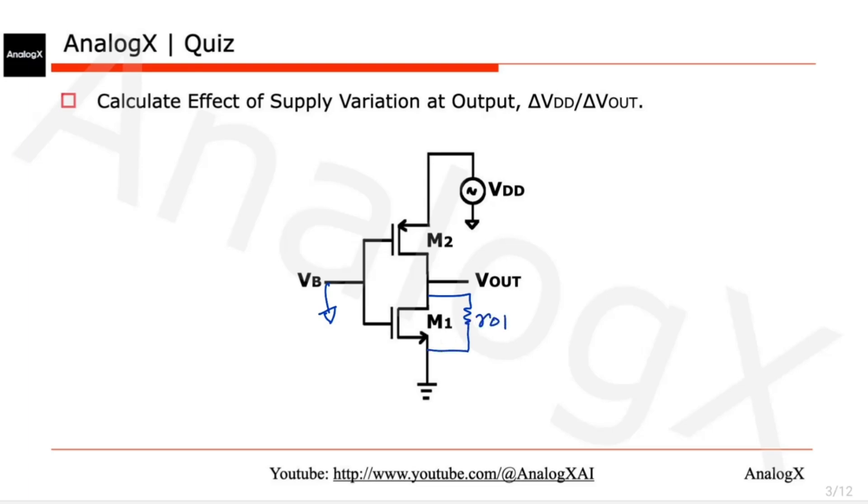This one is ro1 and this one is ro2. We will follow that convention to not get confused. Whenever I use equations, I will use VGS for both PMOS and NMOS.